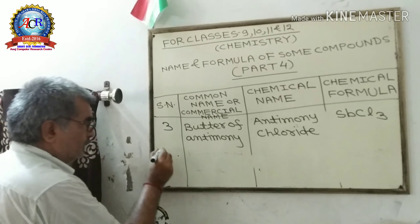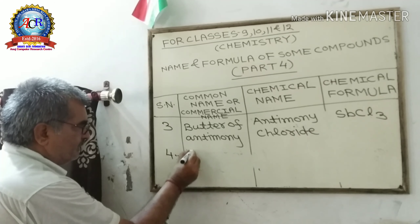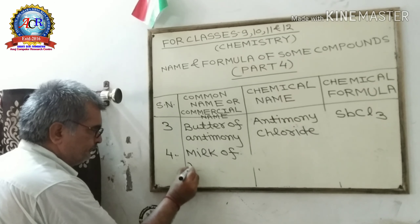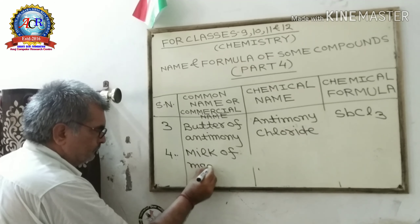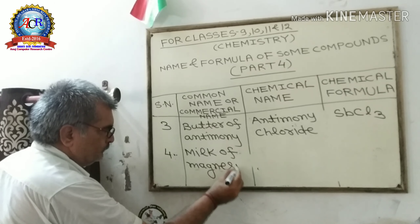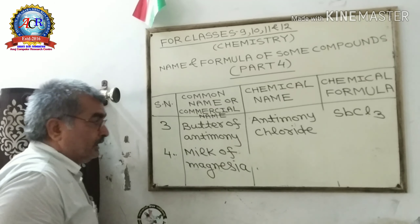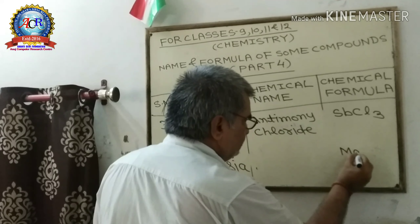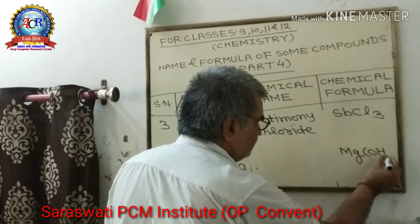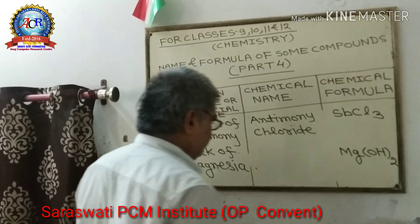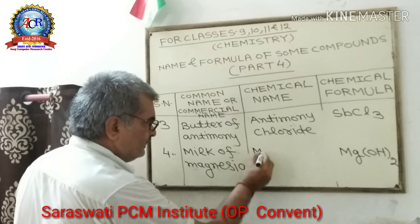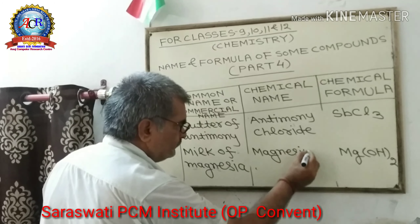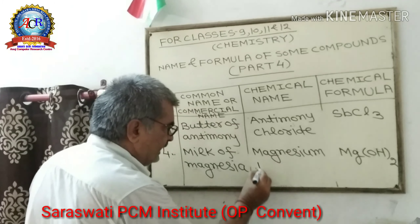Fourth: Milk of Magnesia. Its chemical formula is Mg(OH)₂. Its chemical name is Magnesium Hydroxide.